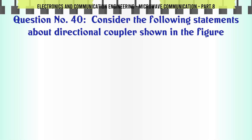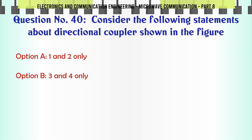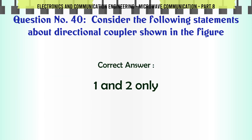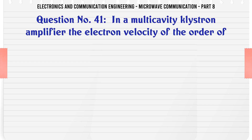Consider the following statements about the directional coupler shown in the figure — A. 1 and 2 only, B. 3 and 4 only, C. 1, 2 and 3, D. 2, 3 and 4. The correct answer is 1 and 2 only.